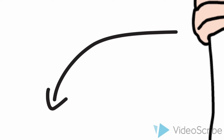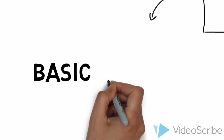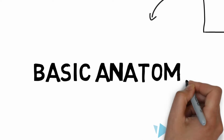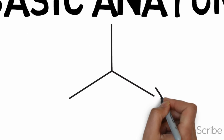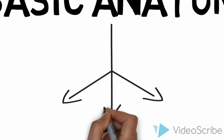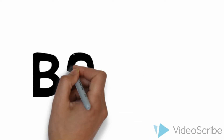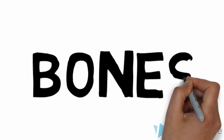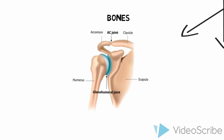We will start by discussing basic anatomy in three parts: bones, muscles and ligaments, and nerves. The shoulder consists of four main joints: the sternoclavicular, acromioclavicular, scapuloclavicular, and glenohumeral joints.